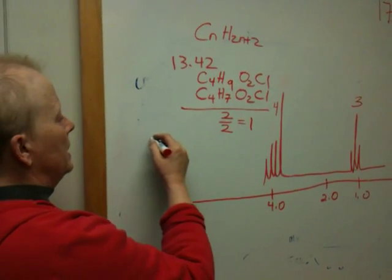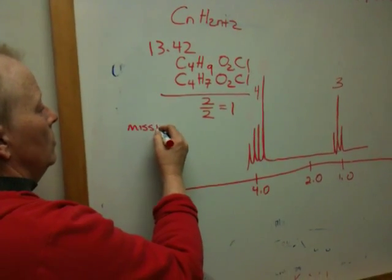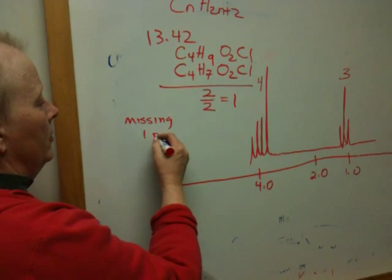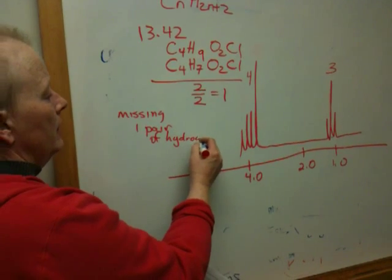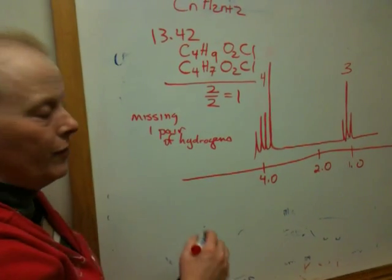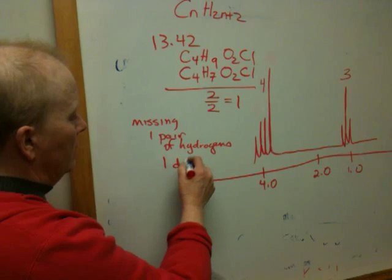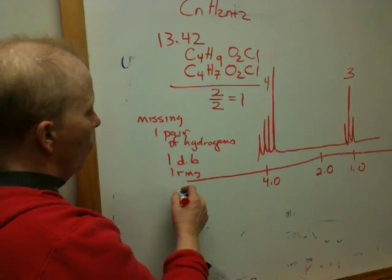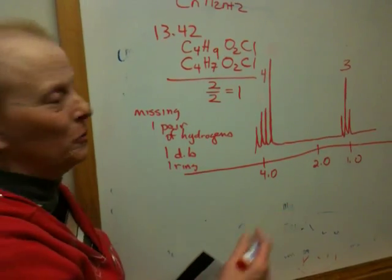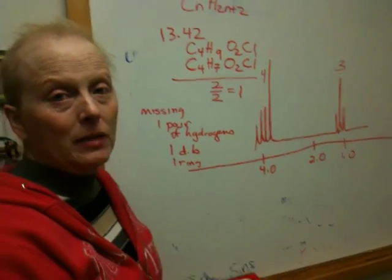This means we're missing one pair of hydrogens. Structurally, this is the equivalent of one double bond, one ring, or, well, that's it. One double bond or one ring. No triple bonds, right? A triple bond is the loss of 2.